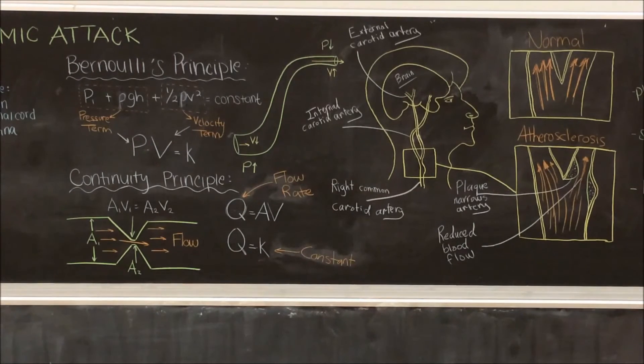Therefore, as cross-sectional area decreases, the velocity increases proportionally.